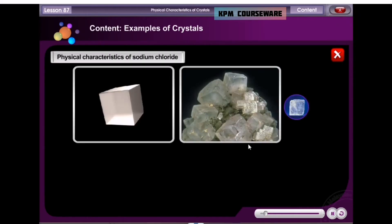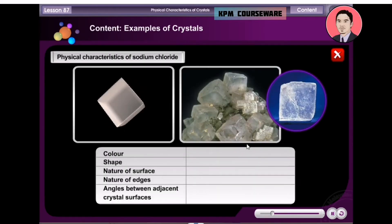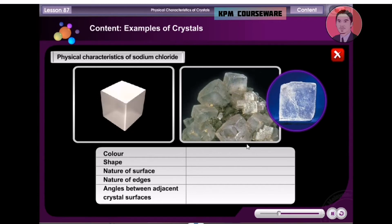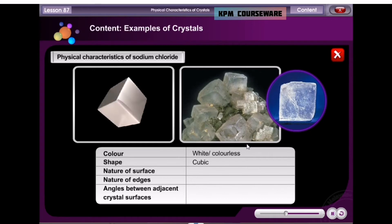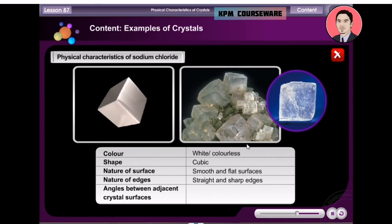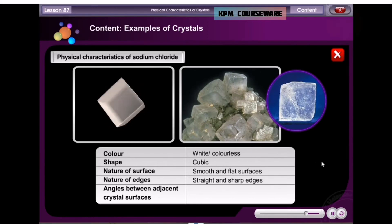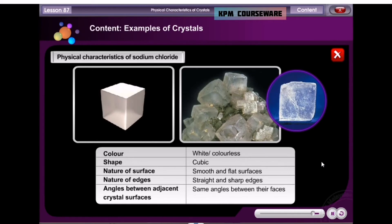This is a sodium chloride crystal. Let us have a closer look at the crystal. The sodium chloride crystal has a cubic shape. The surfaces are smooth and flat. Its edges are straight and sharp. Sodium chloride crystals have sharp corners and the same angles between their faces.